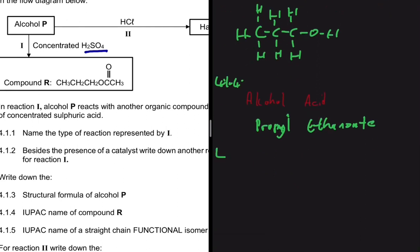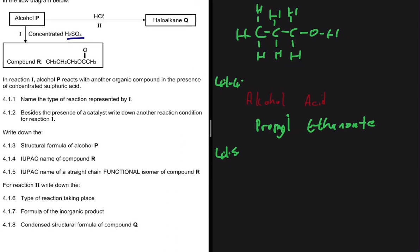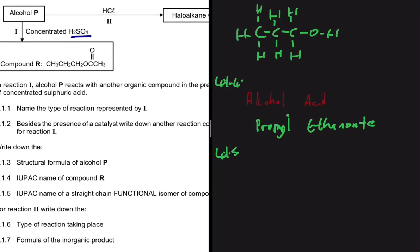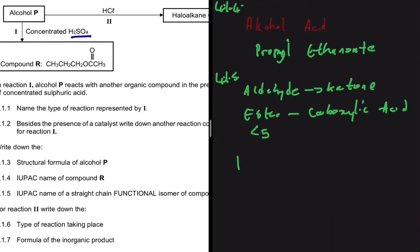For 4.1.5, we need to write the IUPAC name of a straight-chain functional isomer of compound R. Compound R is an ester with five carbons. The functional isomer of an ester is a carboxylic acid — just as the functional isomer of an aldehyde is a ketone. So a carboxylic acid with five carbons will be the functional isomer, and the IUPAC name we're looking for is pentanoic acid.